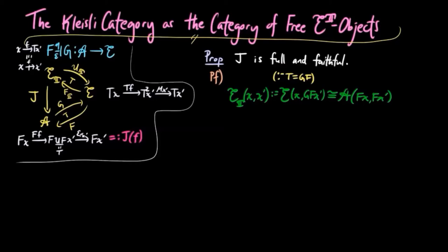We have to verify that this isomorphism is given by j acting on morphisms. We have f as a morphism in E from x to gf x prime. Then by adjunction, this is taken to the morphism ff followed by epsilon fx prime, which is by definition j on f.